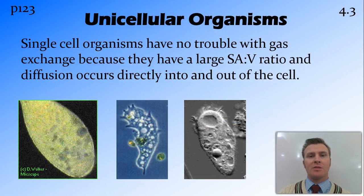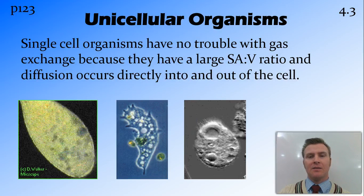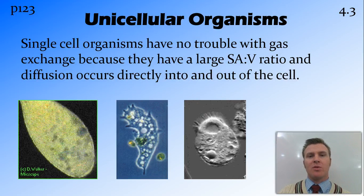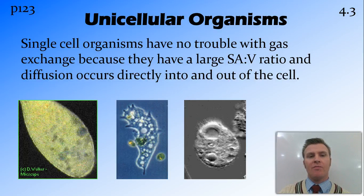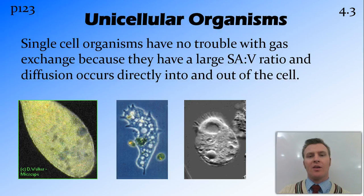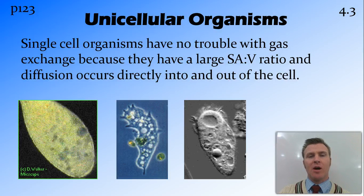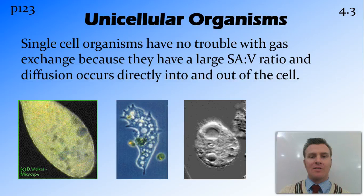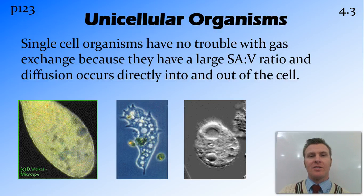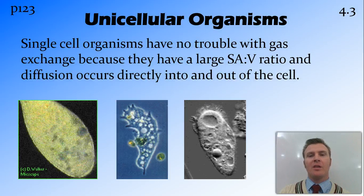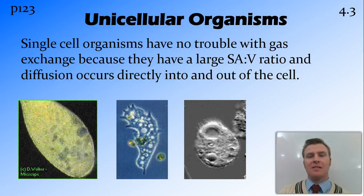Unicellular organisms — organisms that are only one cell — don't have any problems with gaseous exchange. This is because of their high surface area to volume ratio, so diffusion can occur directly across the cell membrane and into or out of the cell. The limiting factor is that to keep that surface area to volume ratio high, that cell needs to be quite small, so they're limited in how big they can grow.